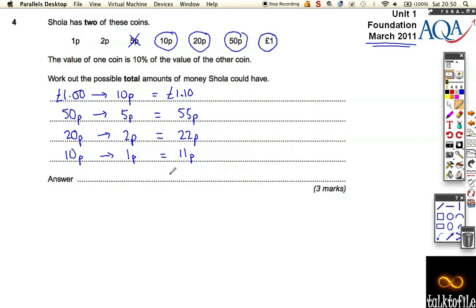So they're the only combinations she can have. So she can have £1.10. She could have 55p. She could have 22p. Or she could have 11p.